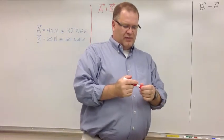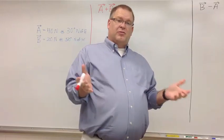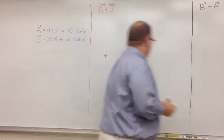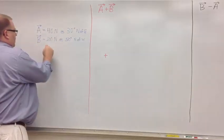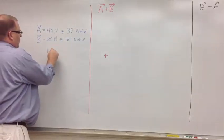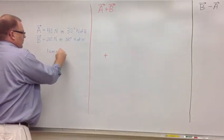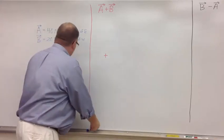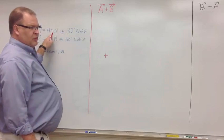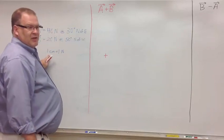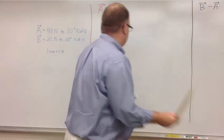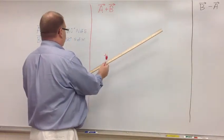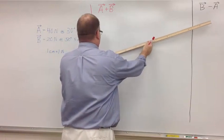Next thing I'm going to do is draw the vector out for my scale. But what's my scale? The scale I'm going to use is 1 centimeter for each newton. 40 newtons, 40 centimeters. So from the origin through the 30 degree mark, I'm going to draw 40 centimeters.